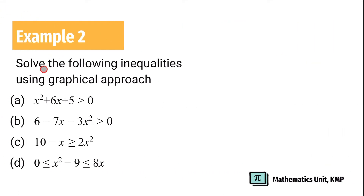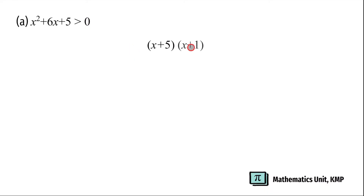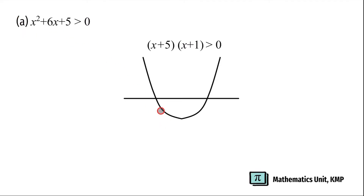Example 2: solve the following inequalities using graphical approach. x² + 6x + 5 > 0. First, make sure our a is positive and all the variables are on the left-hand side, and that 0 is on the right-hand side. The next step is to factorize: the linear factors are (x + 5) and (x + 1), which is greater than 0. Let's draw a smile graph because our a is positive. For the linear factor x + 5, the x-intercept is -5. And for x + 1, the x-intercept is -1.